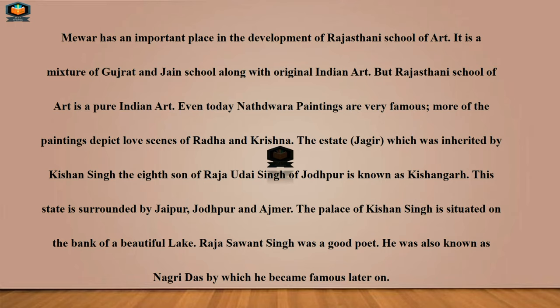The state Jagir inherited by Kishan Singh, the eighth son of Raja Uday Singh of Jodhpur, is known as Kishanagad — named after Kishan Singh. This state is surrounded by Jaipur, Jodhpur, and Ajmer, which are its three neighboring places.